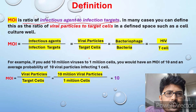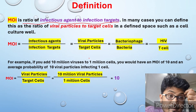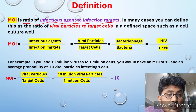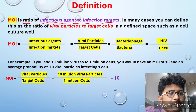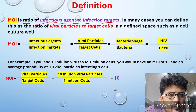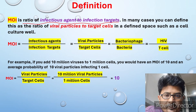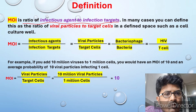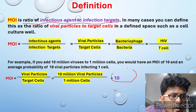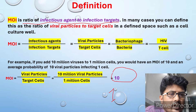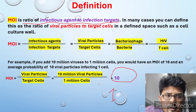This ratio defines the multiplicity of infection. For example, if you add 10 million viruses to 1 million cells — it can be any cell: bacteria, animal, or plant — you would have an MOI of 10. That is a very simple calculation: 10 million virus particles divided by 1 million cells. If you need an MOI of 1, you would apply 1 million viral particles to 1 million cells.